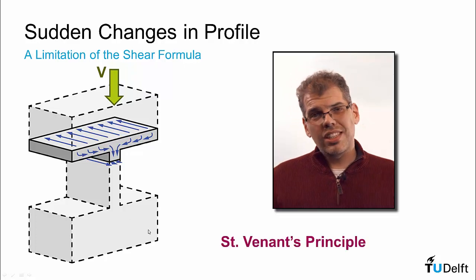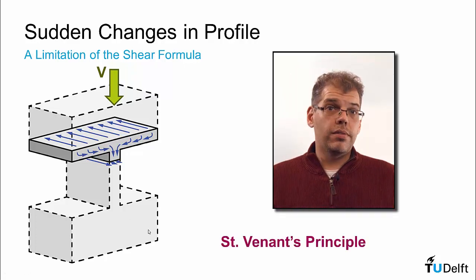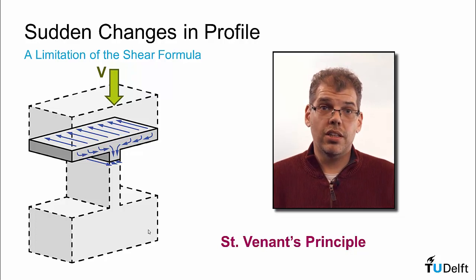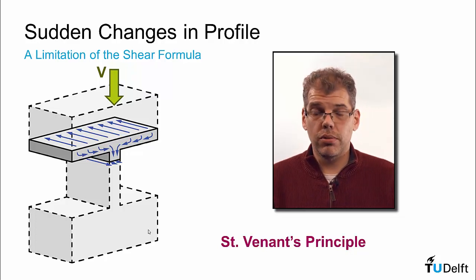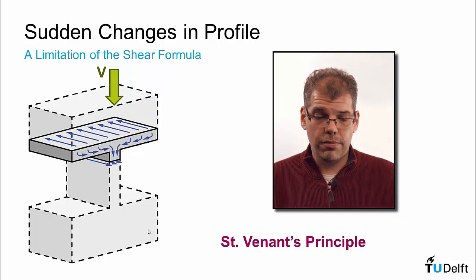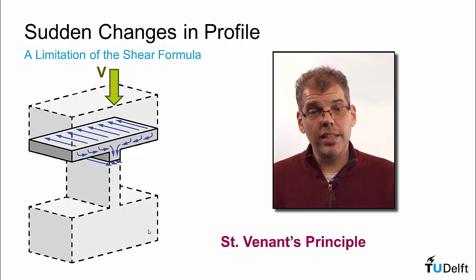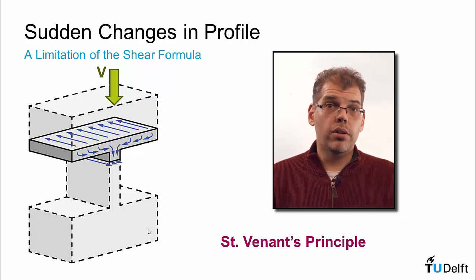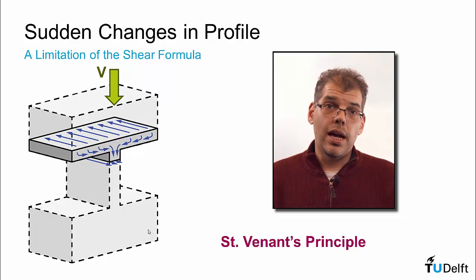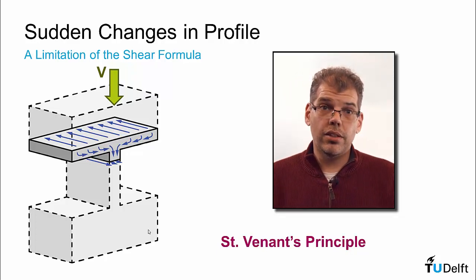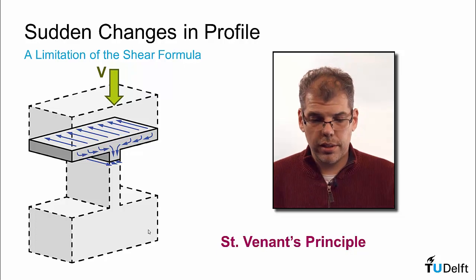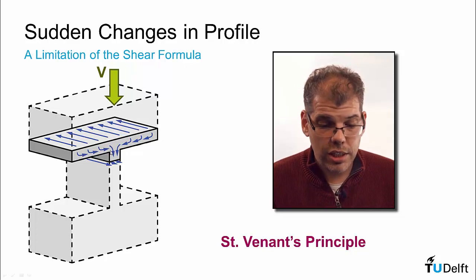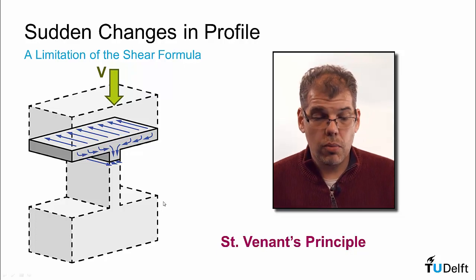This kind of disruption of the stress field — which our equations predict assuming a well-distributed type of field — is examined when we introduce the concept of Saint-Venant's principle, where certain boundary conditions can interfere with that well-distributed stress. That sudden transition is precisely one of those things.